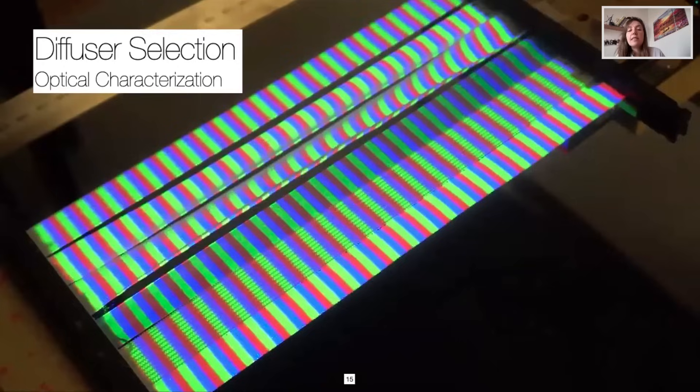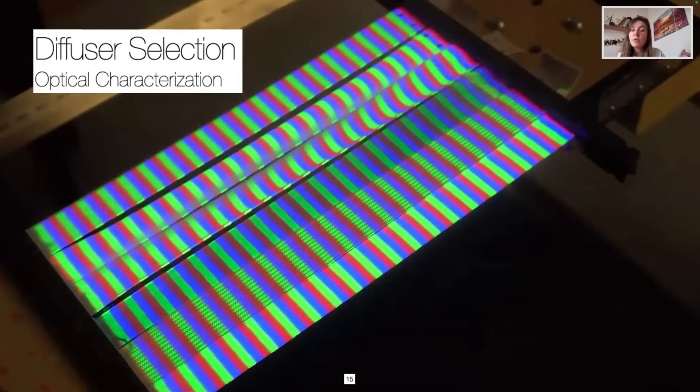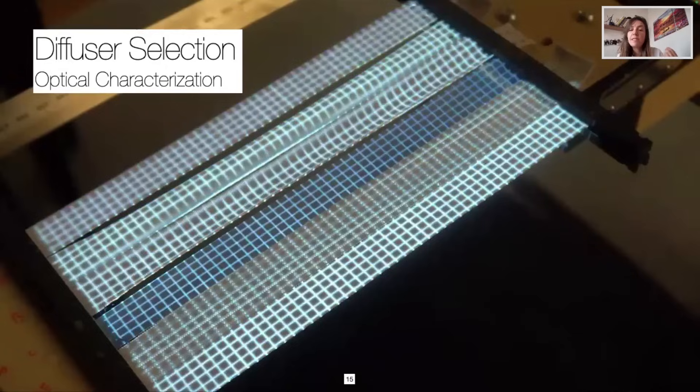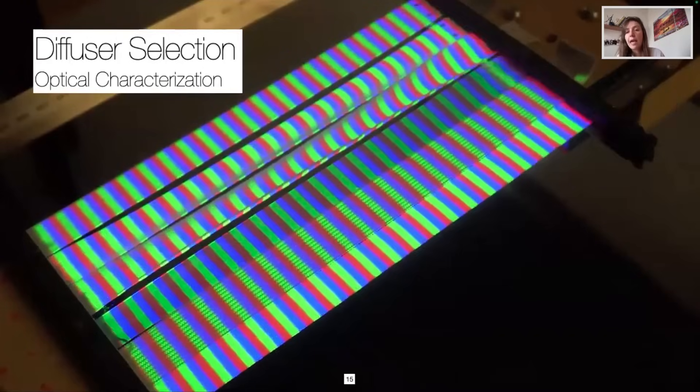Then we characterized the optical properties of our samples with a grid pattern, RGB stripes and a white light while being stretched and relaxed.